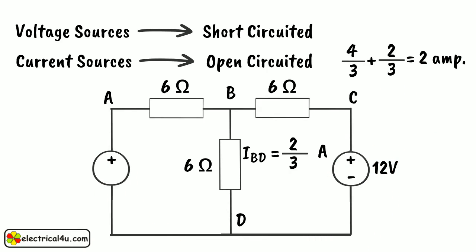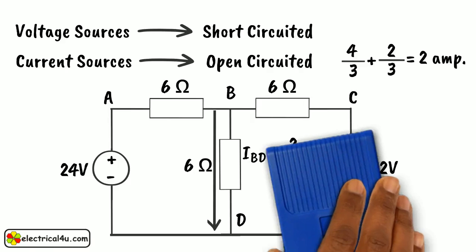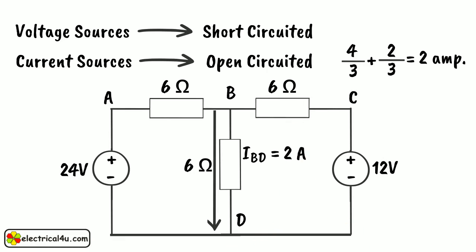After taking both sources into the circuit, let us calculate the current through branch BD. By applying any simple circuit law, we will find that the current through branch BD is 2 amperes.